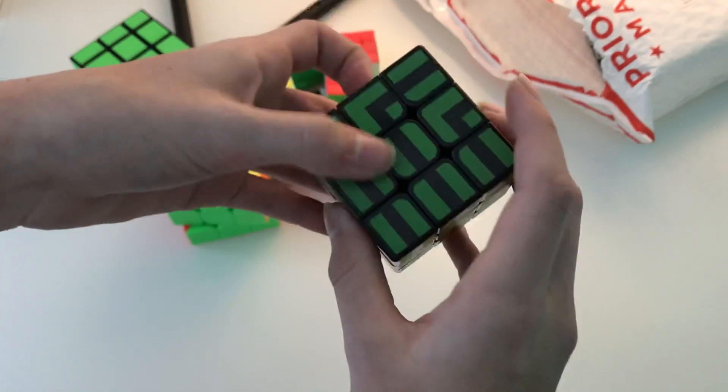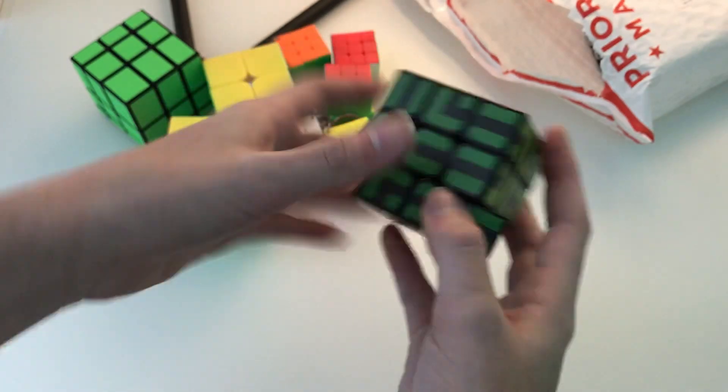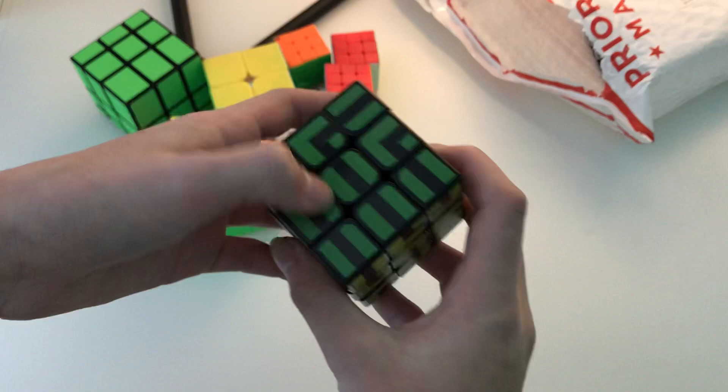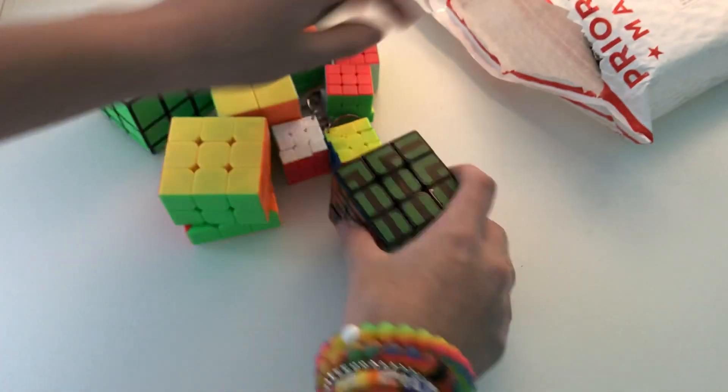I do like the stickers. It shouldn't be too hard to solve because of the colors around it. I wish it was just white with the black lines, which would make it more challenging to solve. But I guess it could be challenging with the orientation of the centers.